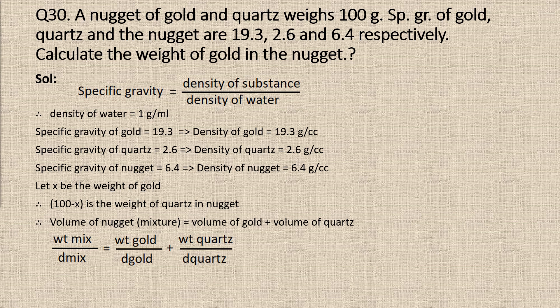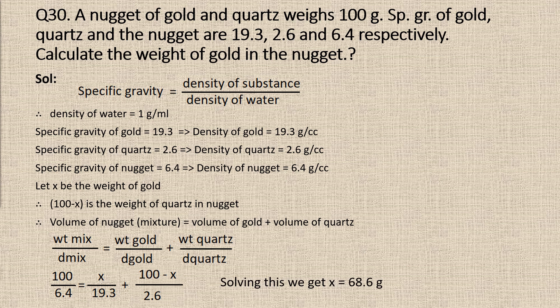We get the equation: 100 divided by 6.4 equals x divided by 19.3 plus (100 minus x) divided by 2.6. Solving this, we get x equal to 68.6 grams. Therefore, the weight of gold in the nugget is 68.6 grams.